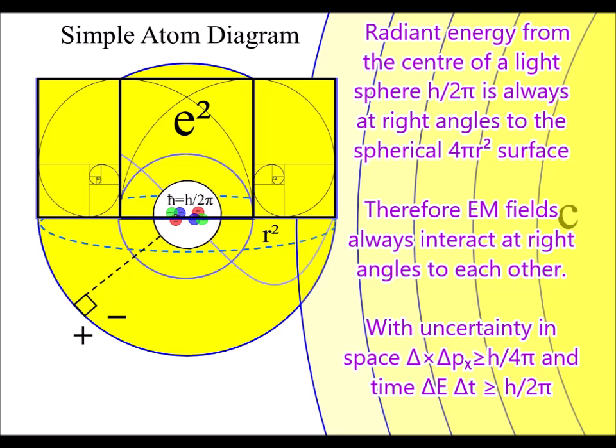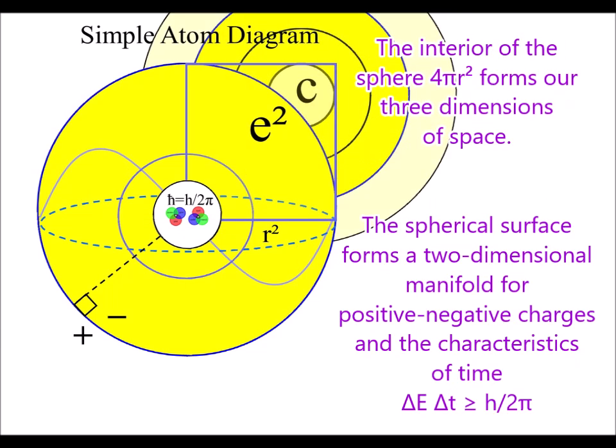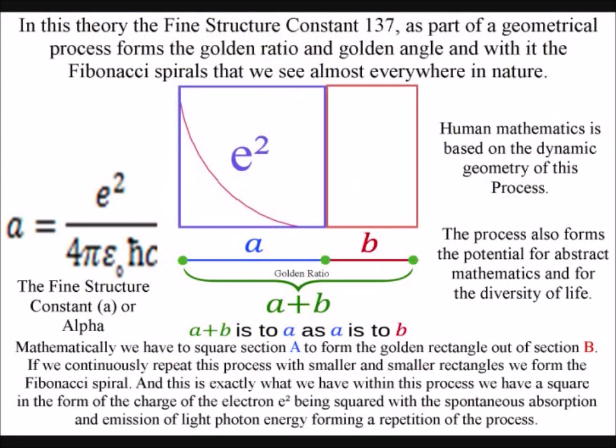This can form a repetition with photon energy levels cascading down, with energy levels changing based on the same geometry. This forms the potential for the most beautiful of geometrical shapes: the Fibonacci spiral.